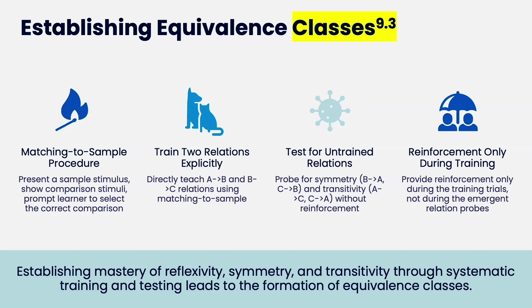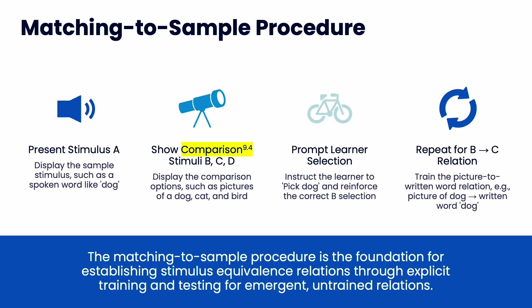Establishing equivalency classes: you present a sample stimulus and comparison stimuli, then prompt the learner to select the correct comparison — that's our matching to sample. You train two relations explicitly: A to B and B to C using matching to sample. Then you see if untrained relations (A to C) occur naturally without reinforcement. You provide reinforcement during training trials, not during emergent relation probes. This saves time because emergent relations happen and you have an equivalence class.